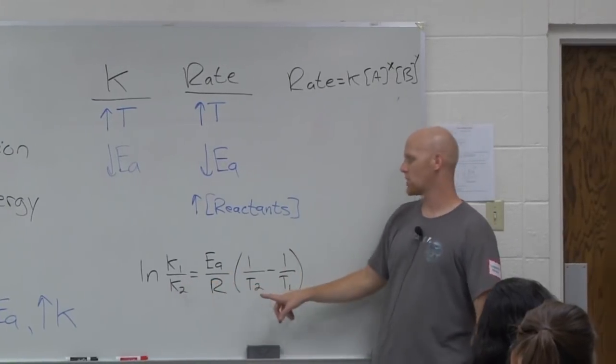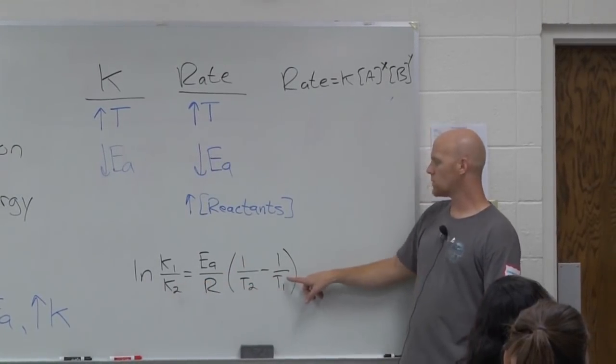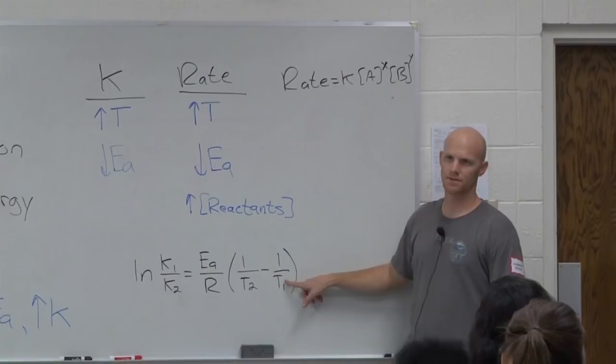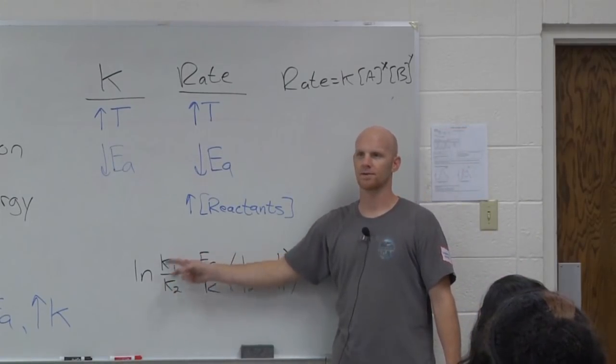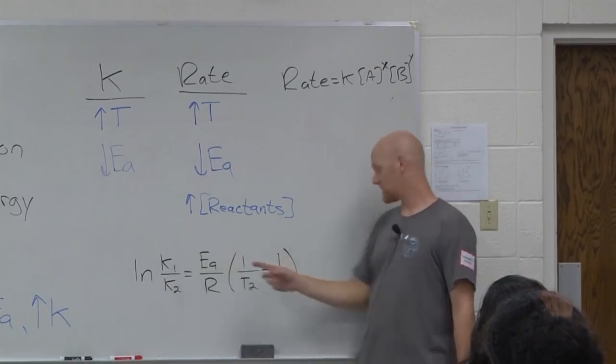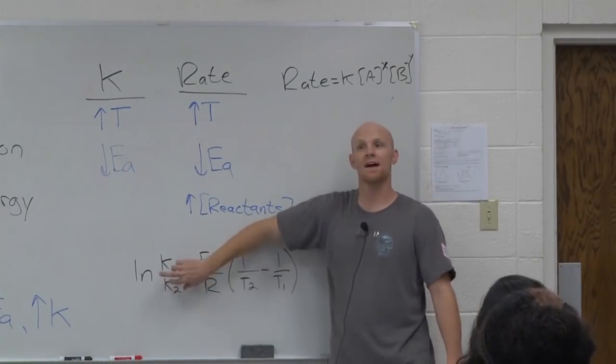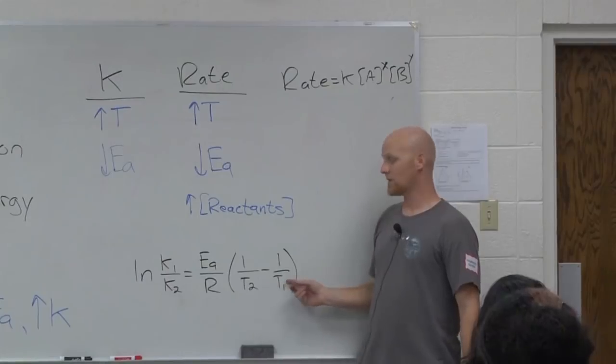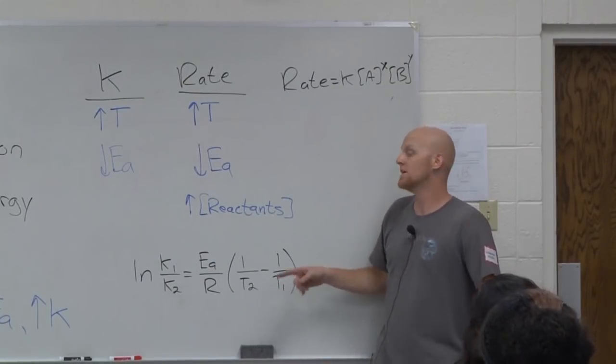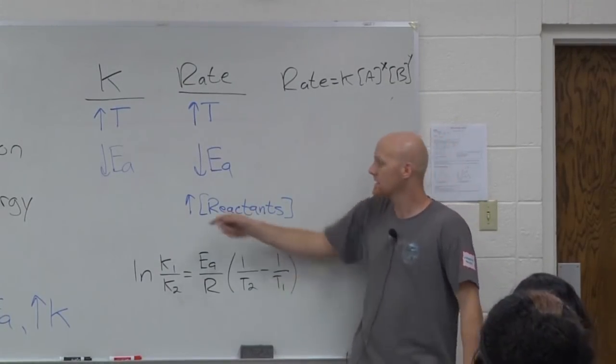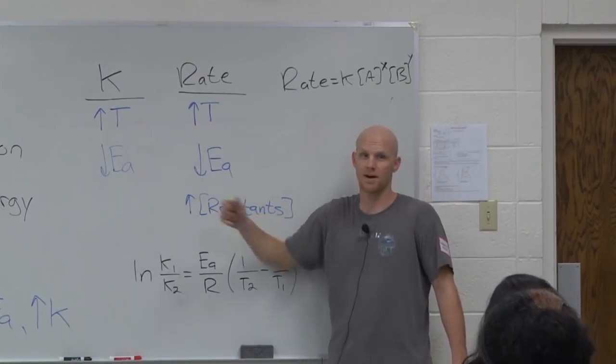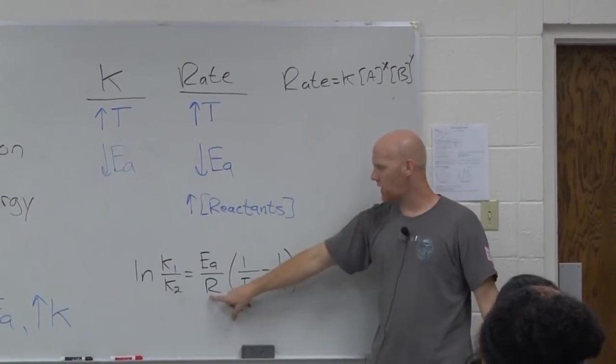So if K1 has to go with T1, K2 has to go with T2. So if I make T1 the higher temperature, then which K better be the larger K? K1. Higher temperature is going to have the larger K value. Lower temperature would have the lower K value. And actually you could do it either way. You could make T1 the high temperature or the low temperature. It doesn't matter. Just make sure if you make them the high temperature, then K1 is the larger K value, and vice versa.